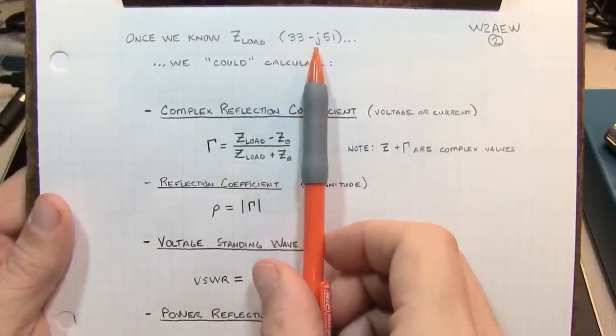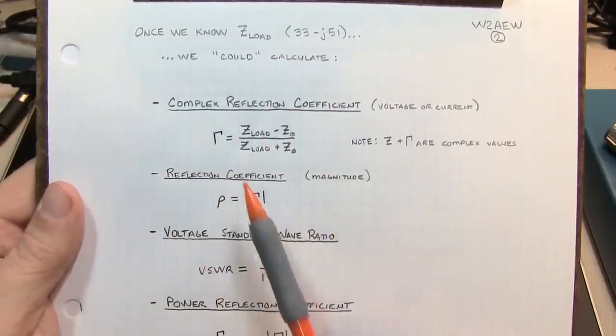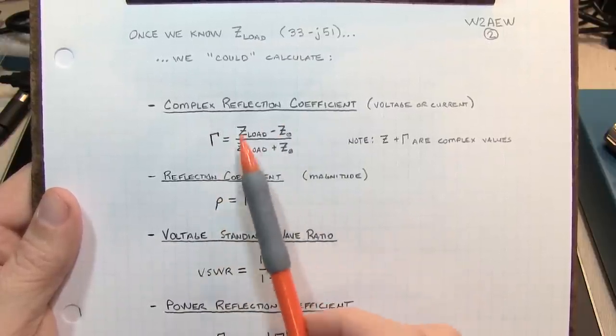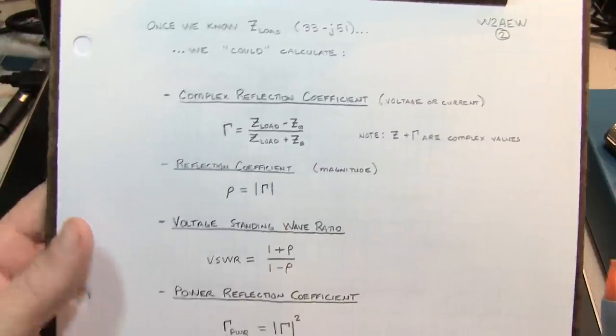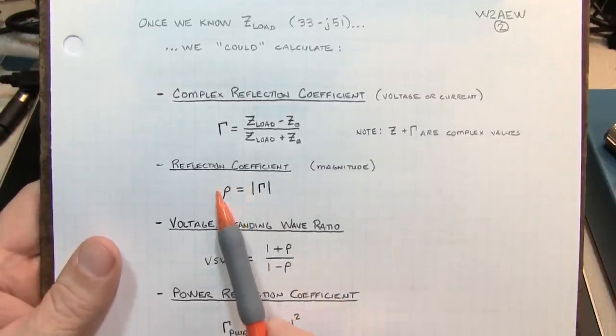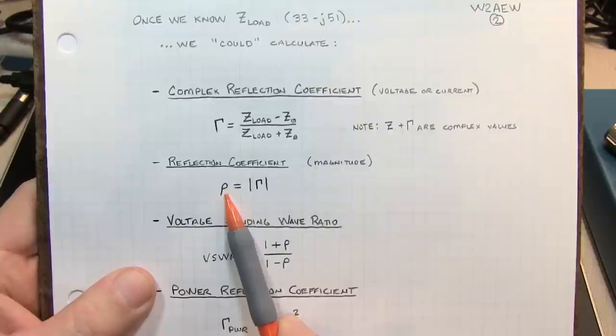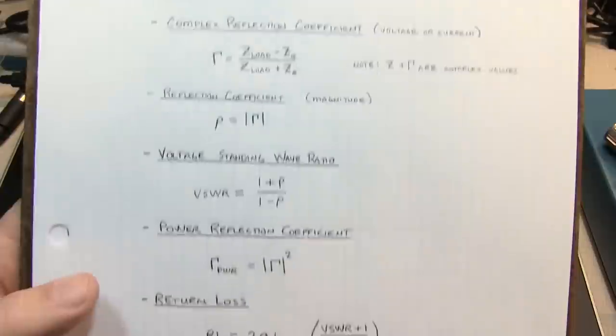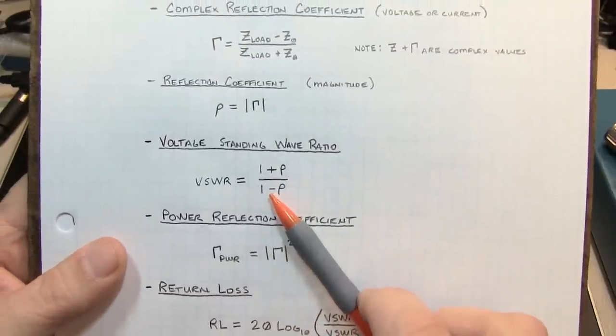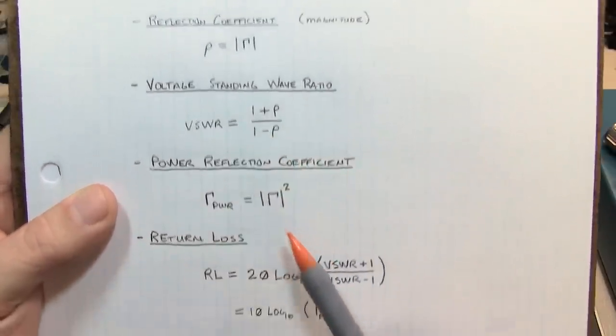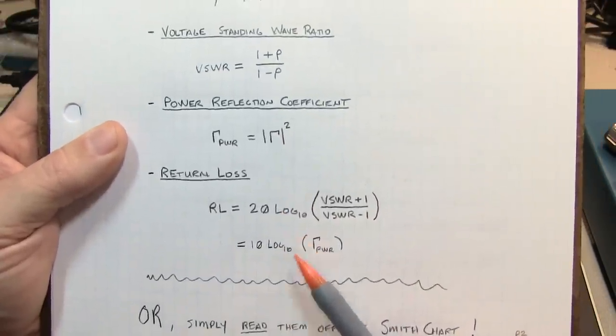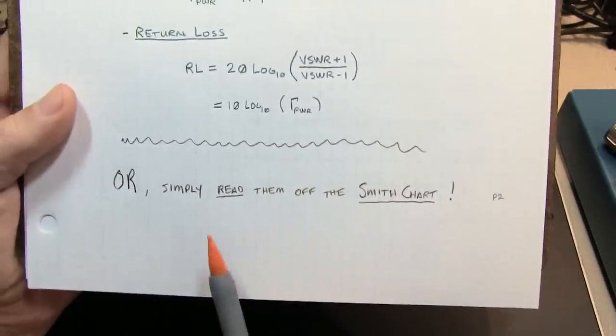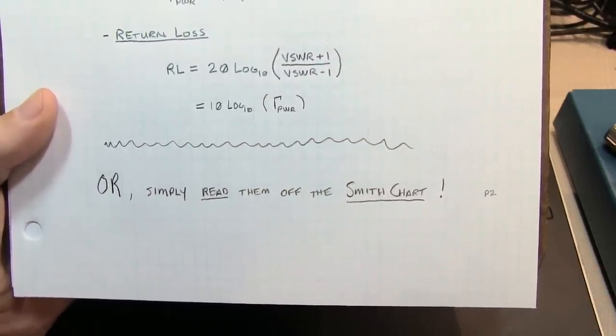Once we know the load impedance, we could calculate the complex reflection coefficient - remember these are complex values, so not easy computations. We could get the magnitude of reflection coefficient, often called rho, compute the voltage standing wave ratio or VSWR, the power reflection coefficient, or the return loss. That's a lot of calculations. Or we can just read them off the Smith chart very simply.